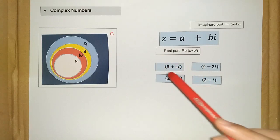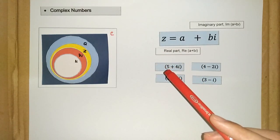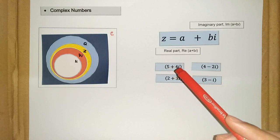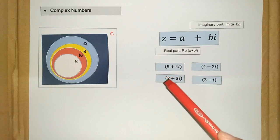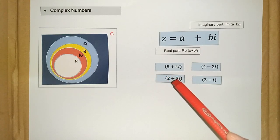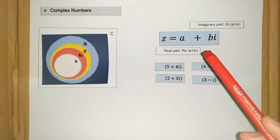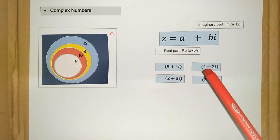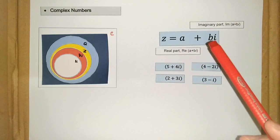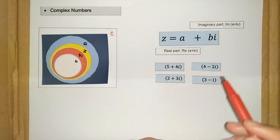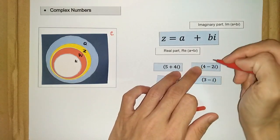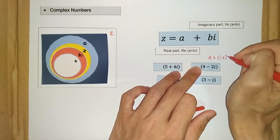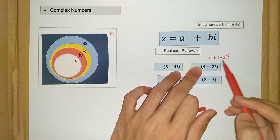Let's have a look at 5 plus 4i. For this number, 5 is the real part and 4 — the positive 4 — is the imaginary part. For 2 plus 3i, 2 is the real part and positive 3 is the imaginary part. For the third example, positive 4 is the real part and negative 2 is the imaginary part — because we can write it as 4 plus negative 2i, so b equals negative 2.